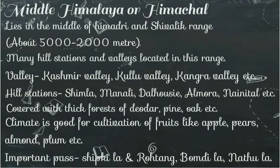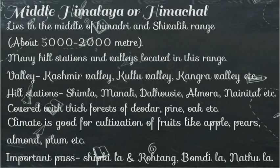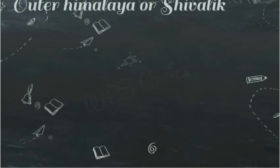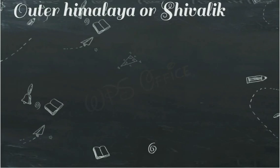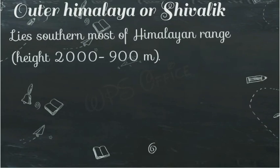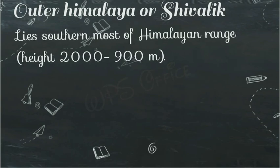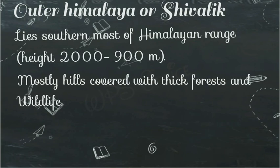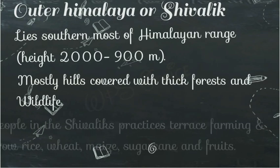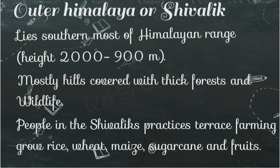And the third range is Outer Himalaya, या Shivalik। यह हिमालय की सबसे कम ऊँचाई वाली range हैं। Lie southern most of Himalayan range — यह हिमालय रेंज के सबसे दक्षिण भाग में है। Mostly hills covered with thick forest and wildlife — यहाँ घने जंगल और बहुत ज़्यादा जंगली जानवर पाए जाते हैं। People in the Shivalik practice terrace farming and grow wheat, maize, sugarcane, and fruits।